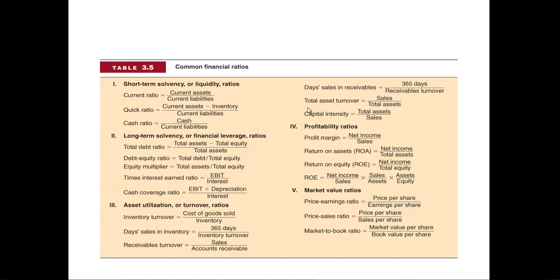A common one we look at is total asset turnover, which measures how good a job the firm does of using its assets to generate sales. A big number here means they're doing a good job using their assets to generate sales. Sam Walton, the founder of Walmart, was famous for putting all his money into his stores and not into his headquarters. In the early years, Walmart's headquarters was a room above their warehouse using folding chairs.